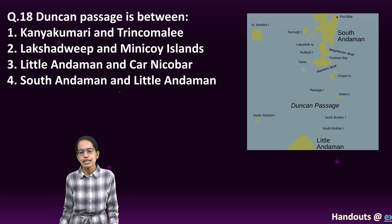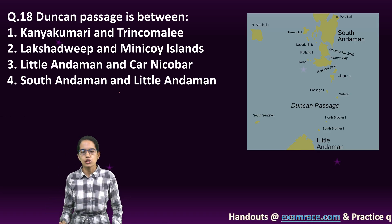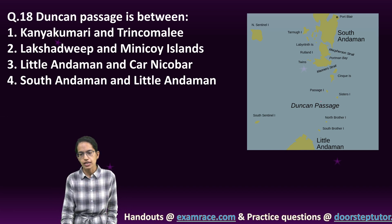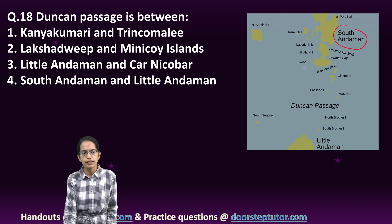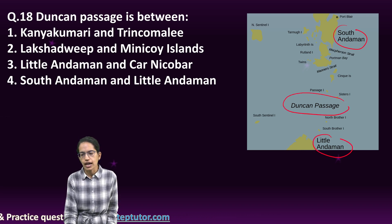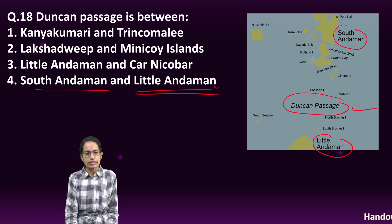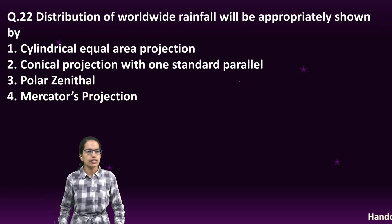The next is Duncan Passage. If you look at the physical and political geography of India carefully and analyze the regions of Andaman, it's South Andaman and Little Andaman — and between them lies the Duncan Passage. So Duncan Passage lies between South Andaman and Little Andaman. That's the right answer.